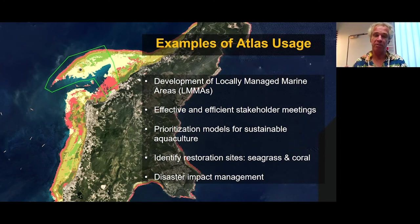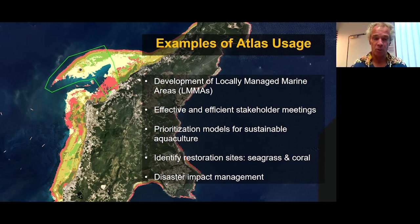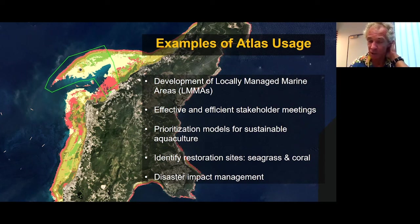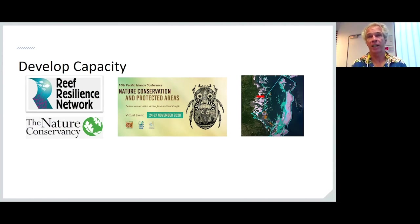We have several examples now where the National Geographic team works with the public using these maps for all kinds of purposes — deciding where to set field data sites, engaging with communities to understand the environment, working with stakeholders on marine protected areas, prioritizing models for aquaculture, sustainable agriculture, restoration, and disaster impact management. For instance, when the big ship grounded on the reef in Mauritius, our maps were used to help assess the impact on that area.